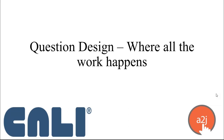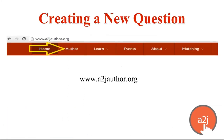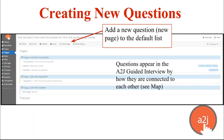Now we're going to talk about question design — this is where 95% of the work that you do in A to J Author will happen. To begin, log in at a2jauthor.org and click the Author tab. Once in the authoring tool, you either open a blank interview or work on one you've already started. From that point, where you're going to spend most of your time is on the Pages tab. We'll talk about the Pages tab and then dive deeper into the Question Design Editor, which is where you actually make changes to pages and add new questions.